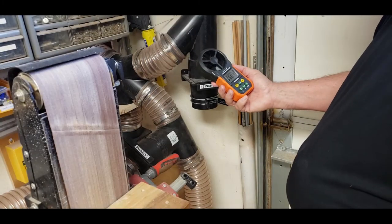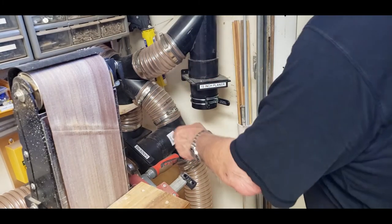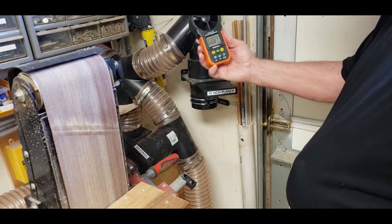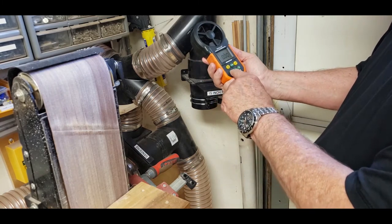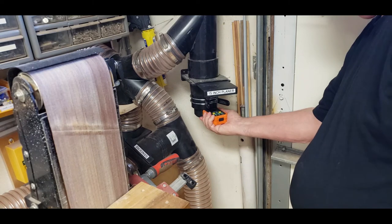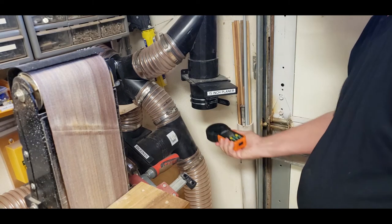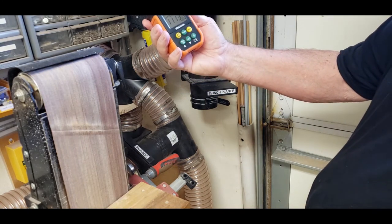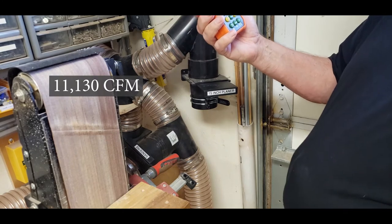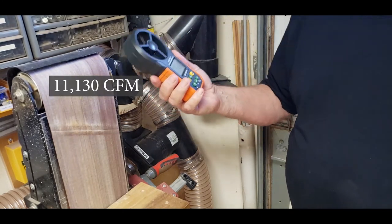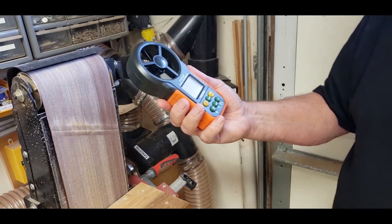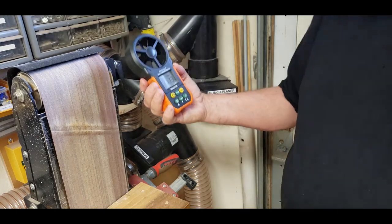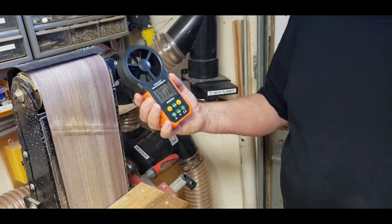So if I am running my planer which takes the most, I am running 11,130 feet per minute. So three times what you would need to suck the chips out. So when I'm using my planer I am going to have zero problems. As you see on there it shows 1113 times 10, so it's so high that it has to put the multiplier at the end.